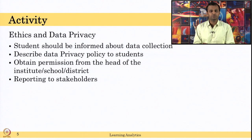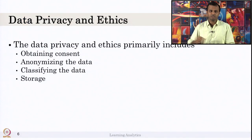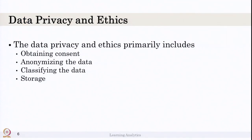You also need to know what data will be reported to stakeholders — for example, whether you want to report all data to all stakeholders in the education setting. In general, data privacy and ethics primarily includes four things.